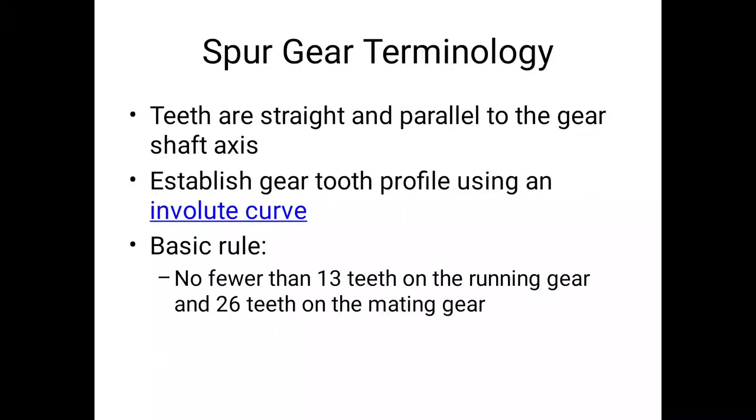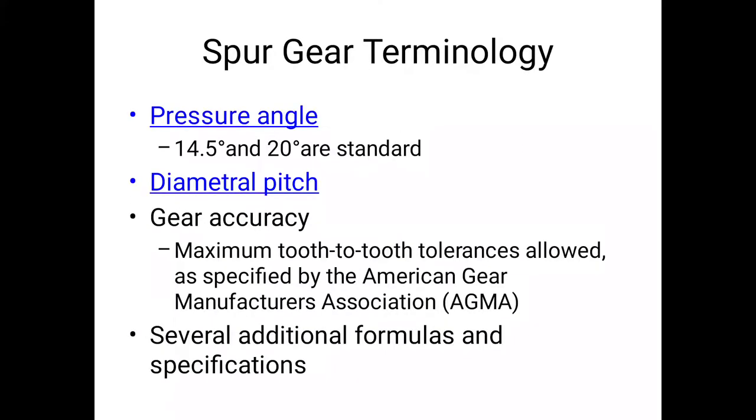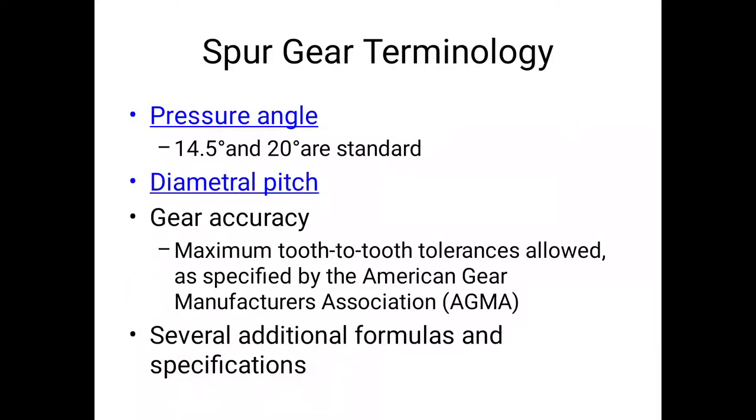Spur gear tooth profile using involute curve. Basic rule: no fewer than 13 teeth on running gear and 26 teeth on mating gear. Spur gear terminology: pressure angle ranges are 14.5 and 20 degrees standard. Diametral pitch and gear accuracy with maximum tooth-to-tooth tolerance as specified by American Gear Manufacturers Association (AGMA). Several additional formulas and specifications are carried out.